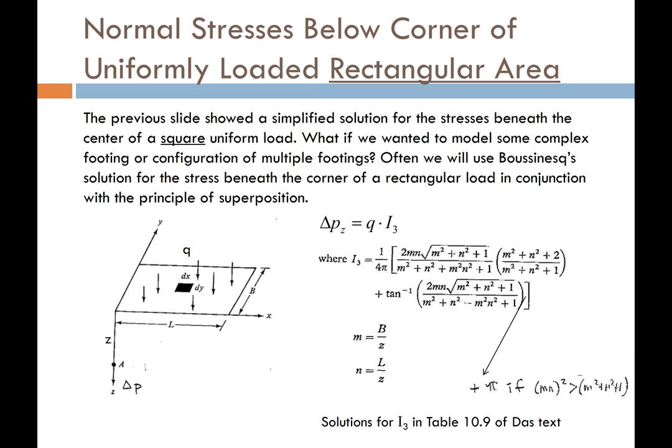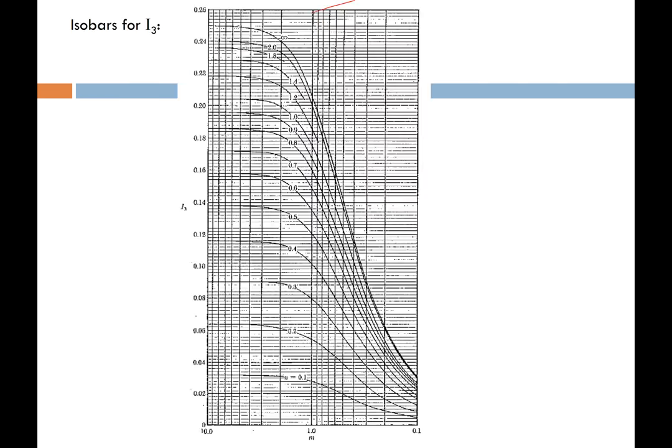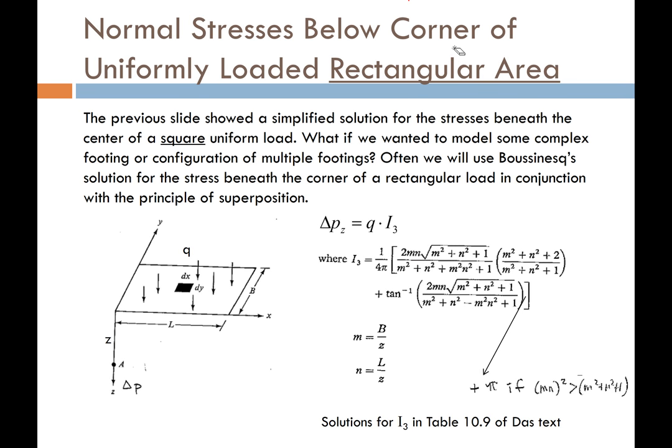Boussinesq gave us a wonderful tool: a methodology to compute or estimate the stresses below the corner — I want to emphasize this is below the corner, not the center — of a uniformly loaded rectangular area. We call this influence factor I-sub-3. I-sub-3 is computed from a fairly involved equation where M and N are functions of the length L and the width B of the rectangular area.